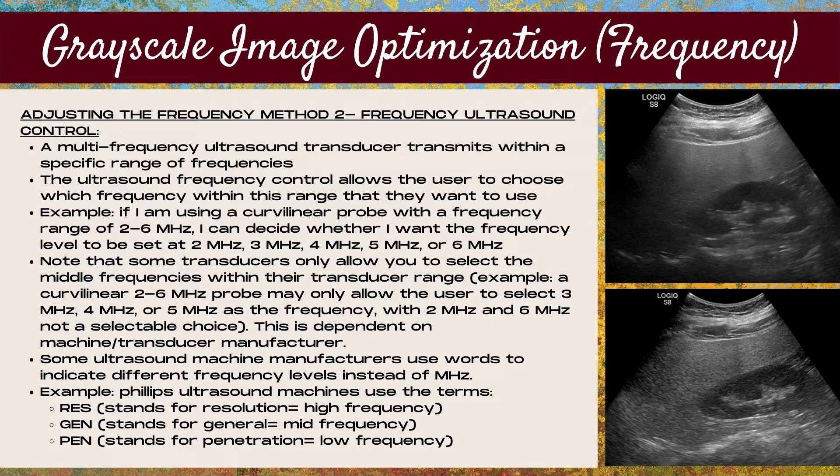Note that some transducers only allow you to select the middle frequencies within their range. For example, a curvilinear probe with a 2 to 6 megahertz range may only allow the user to select 3, 4, or 5 megahertz, with 2 and 6 megahertz not being selectable choices. This depends on the machine and transducer manufacturer.